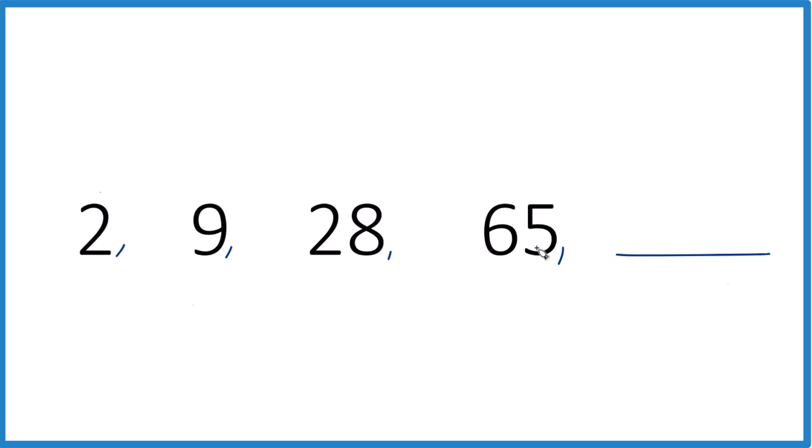For example, 64—8 times 8 is 64, so 8 squared is 64, or 4 to the third power would be 64. And 28, that's close to 27. 3 to the third power, 3 times 3 times 3, that would give us 27.